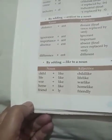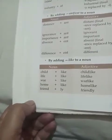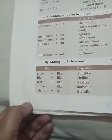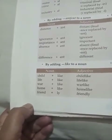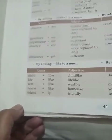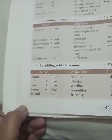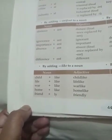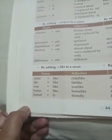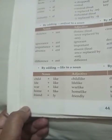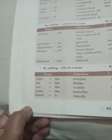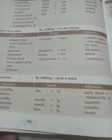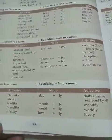By adding LIKE to a noun: CHILD is a noun — if we add the suffix LIKE, it becomes CHILD-LIKE. WAR — if we add the suffix LIKE, it becomes WAR-LIKE.